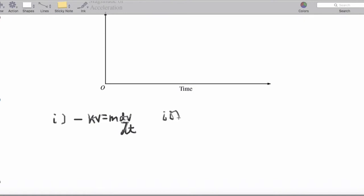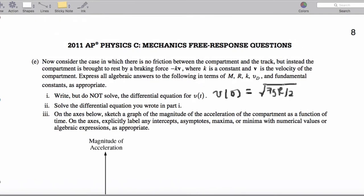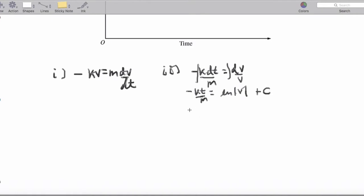And then, for the second part, let's solve that differential equation. So, we're going to say that negative Kdt over M equals dV. We'll integrate. And then, we're going to get negative Kt over M equals Ln of V, plus C. And, just keeping this in mind, we know that at time equals 0, our speed is square root of 7gr over 2. So, keeping this in mind, we're going to say negative Kt over M equals natural log of V plus C, where C, we don't know what it is.